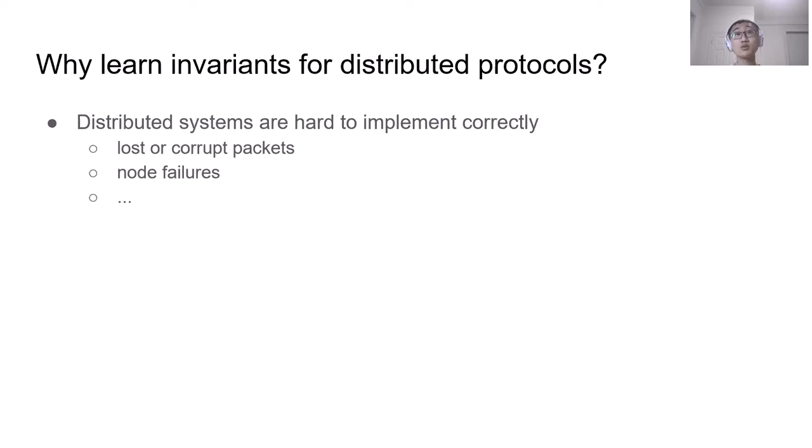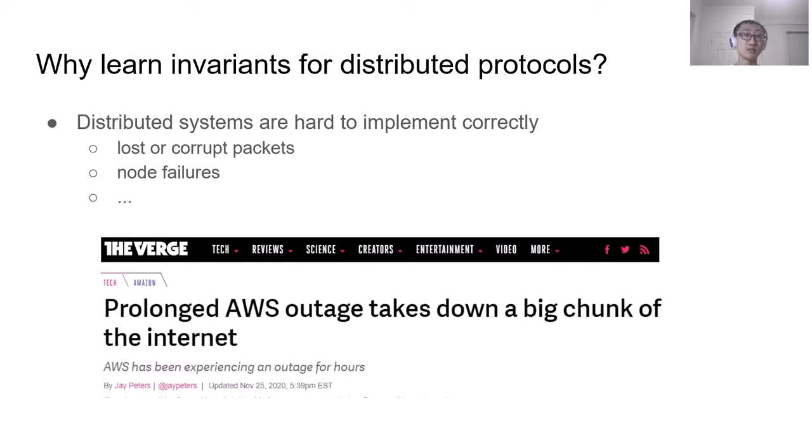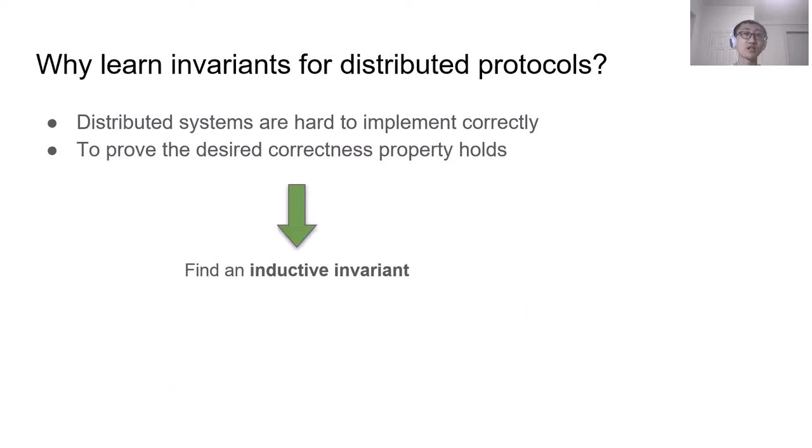Why do we need to learn invariants for distributed protocols? We know distributed systems are hard to design and implement correctly due to non-determinism from lost or corrupt packets, node failures, and other complex scenarios. Failures on distributed systems like cloud services have real-world consequences. To prove a distributed system has some desired property, the most important part is to find an inductive invariant.